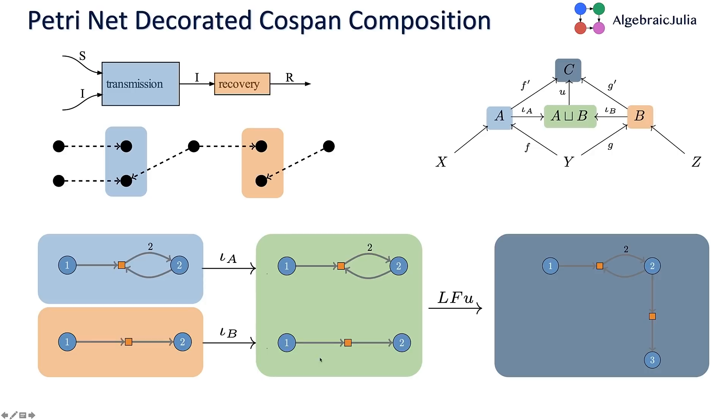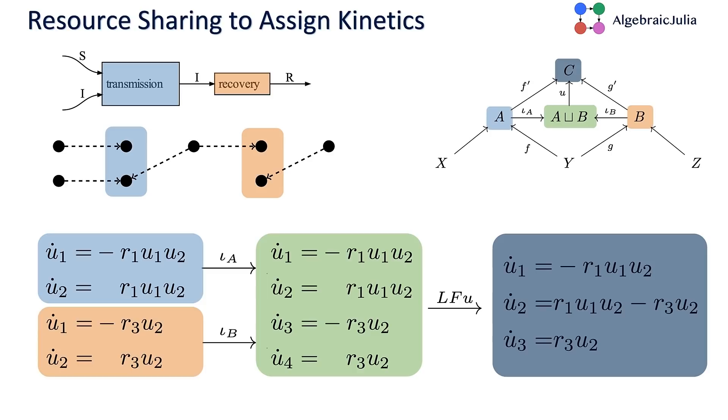I take my transmission system, my recovery system, construct the disjoint union. Then I take an equivalence relation that says this variable and this variable are supposed to be the same. That gives me this three variable system in the bottom right. The decorated cosspan construction tells you how to glue Petri nets together to make big Petri nets.